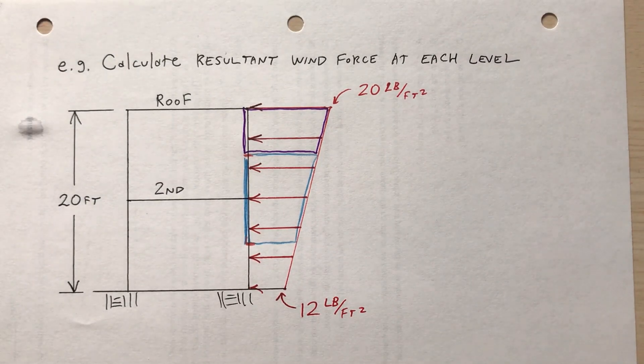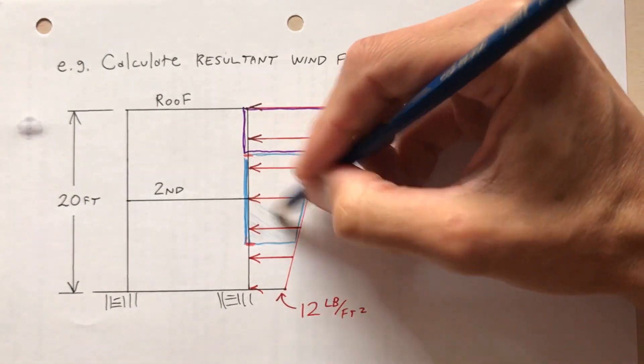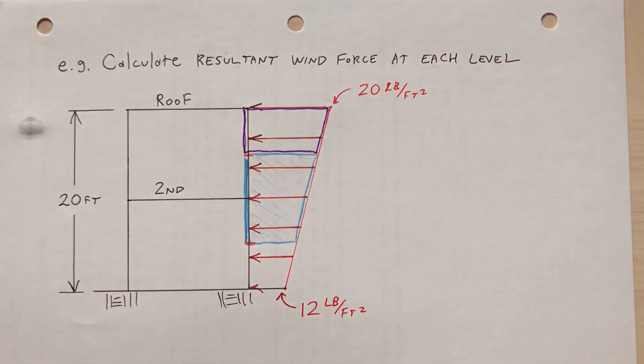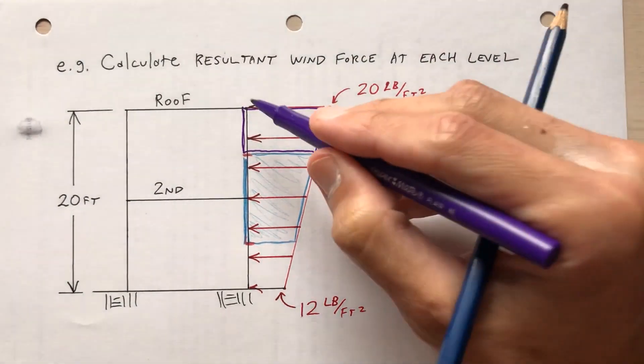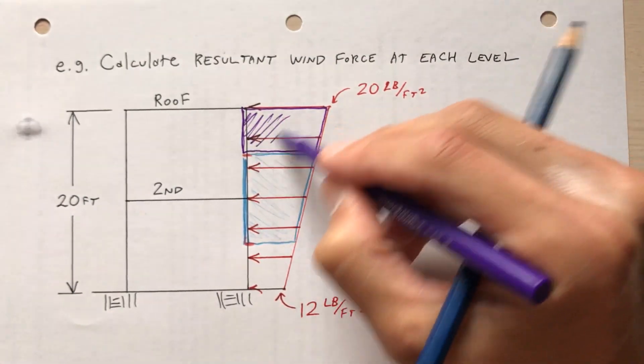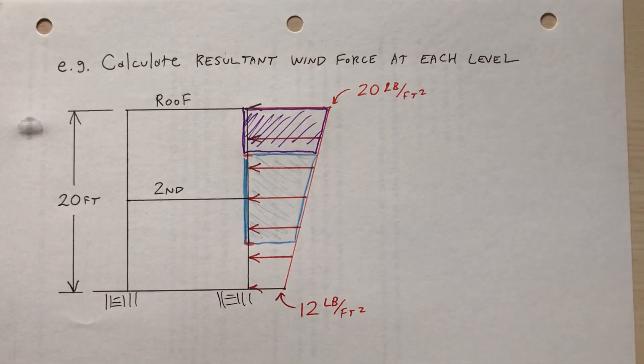So I want the resultant, I want to calculate the resultant of this portion that will be carried by the second floor, and then I want to calculate the resultant of this portion that will be carried by the roof.